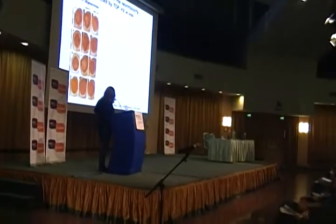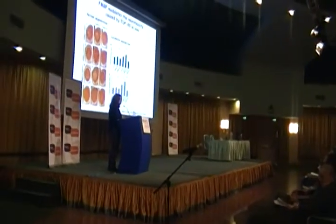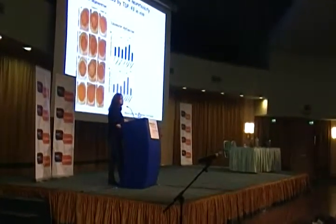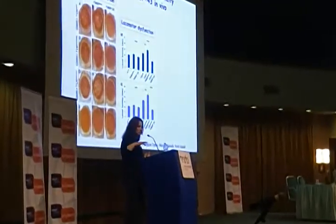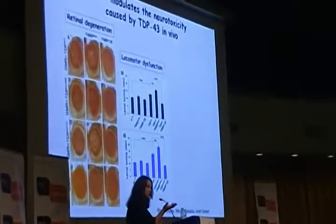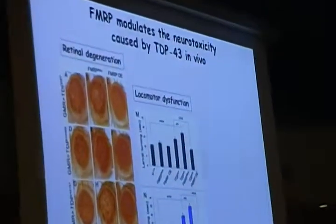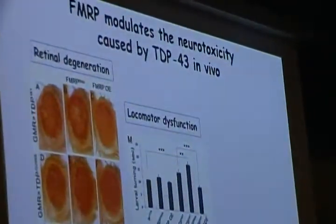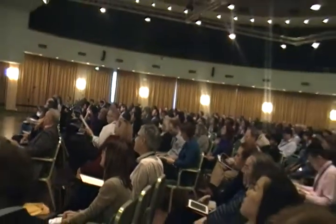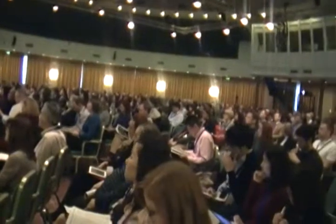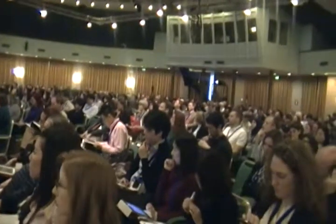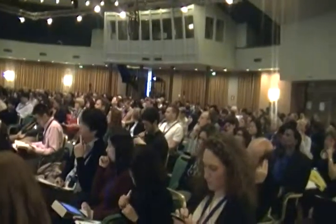How about a different model, like motor neurons? In order to test locomotor function, we use a behavioral assay called larval turning. We let the larvae crawl, then turn them belly up, and count how long it takes for them to return to their normal position and start crawling again. Overexpression of either wild type or mutant TDP43 leads to an increased larval turning time as shown here, and knockdown of FMRP by RNAi enhances this time, while overexpression of FMRP reduces this time almost to control levels.